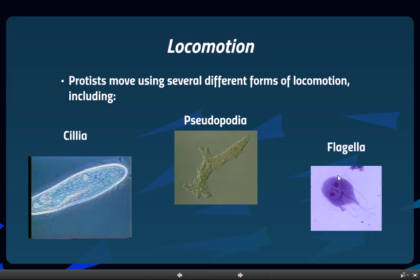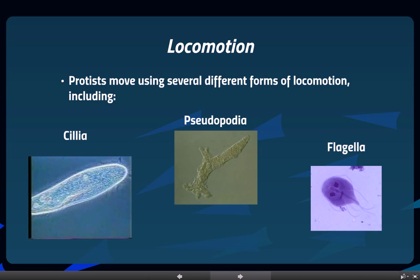This organism is a Giardia, and it has flagella — these long whip-like structures that push back and forth. The only difference between flagella and cilia is that there are more cilia, but the flagella are longer. They use about the same motion, except flagella don't always go uniform; sometimes they'll all whip in different directions.